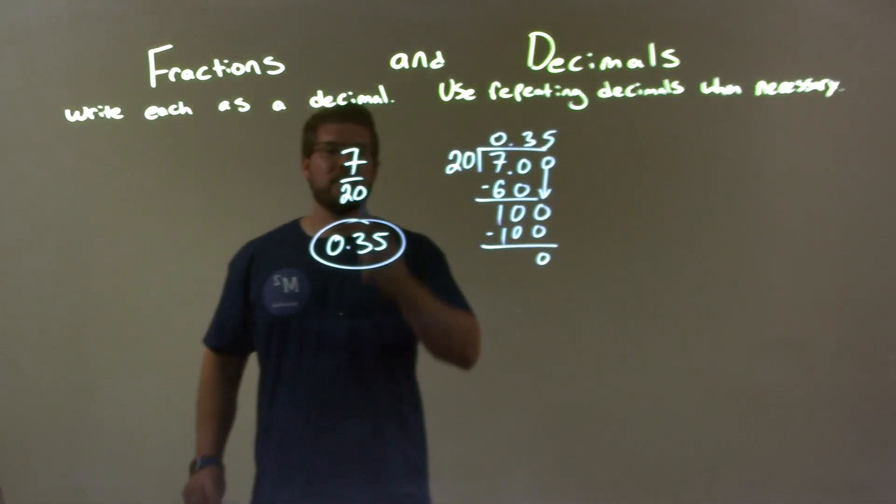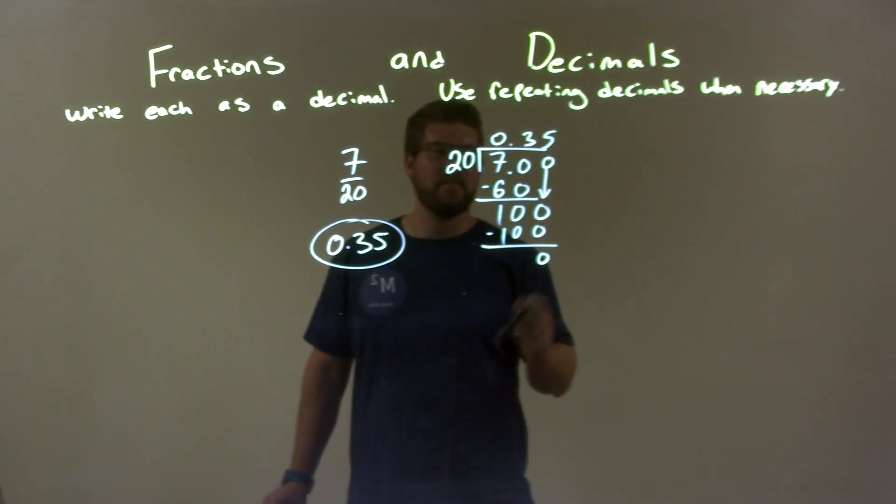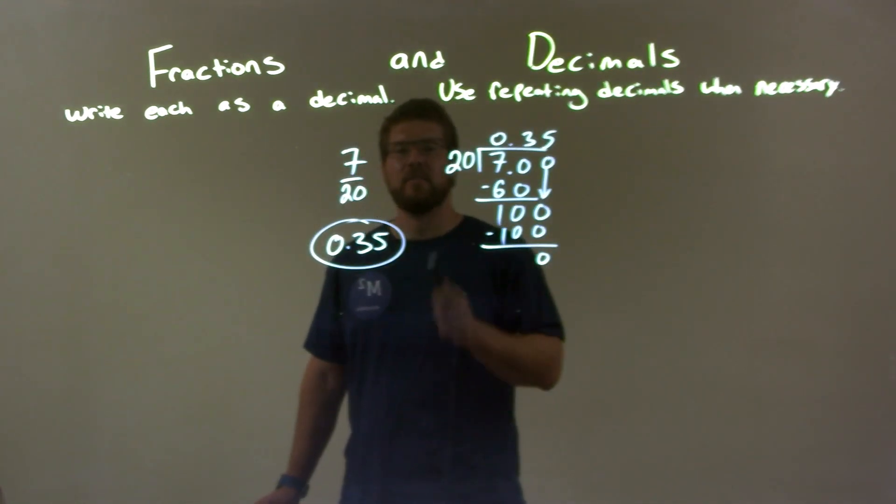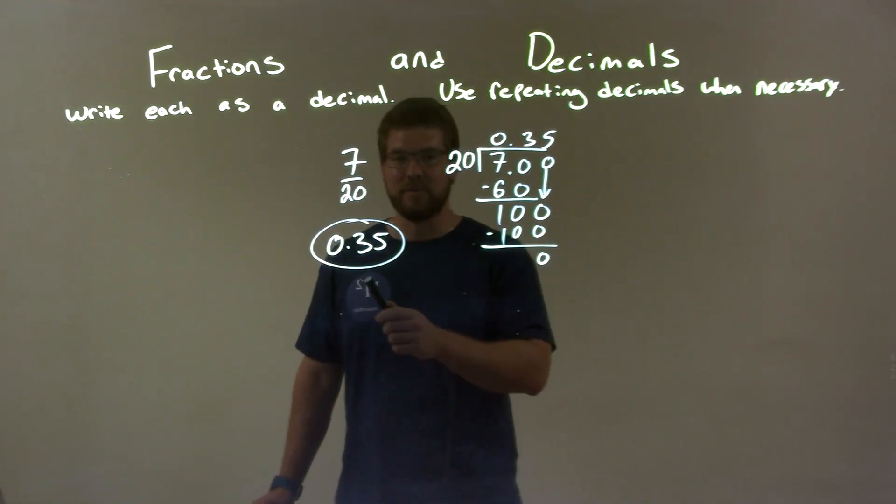So, a quick recap: we're given 7 over 20, and we have to write that as a decimal. I did long division of 20 into 7 and got 0.35. That is our decimal answer, the final answer of the fraction 7 over 20 as a decimal.